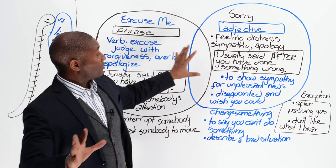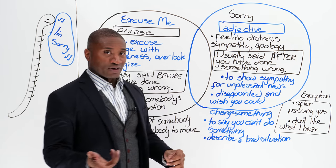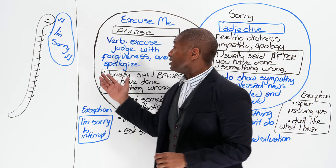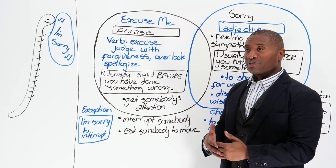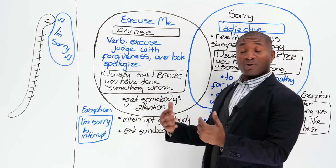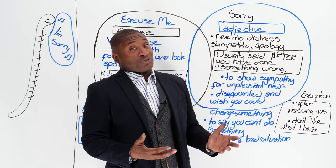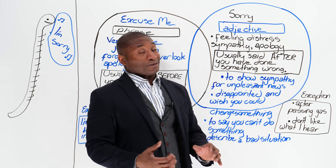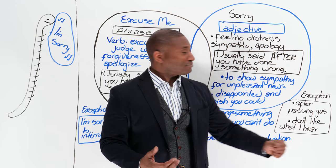Here's the other difference besides the structure. We usually say sorry after you've done something wrong. We use excuse me before we've done something. So we're saying we know what we're about to do isn't comfortable, and we want to be polite and let you know. But we say sorry after we've done it, because it's like — too late, I've already done it. So excuse me doesn't quite work. You have to say I'm sorry, because I've done it.